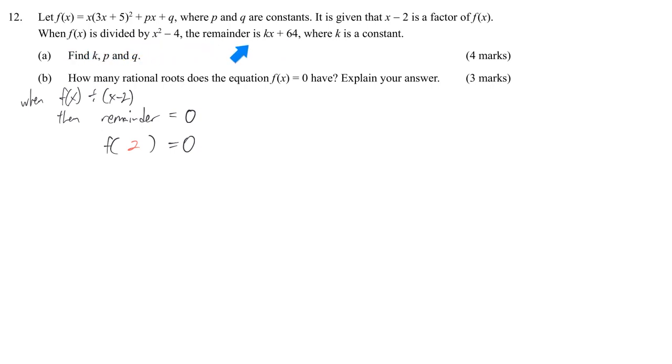The second sentence may be more difficult to understand. When f is divided by this divisor, the remainder is kx plus 64. We're going to apply the same logic. When f is divided by this divisor, the remainder is not 0 this time, it's not a factor. But they tell you the remainder is kx plus 64, so we apply the remainder theorem to express the remainder in terms of the function.